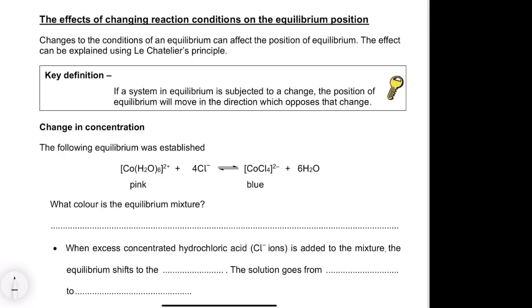In this video we're going to look at the effect of changing different factors, starting with concentration on the position of equilibrium. We've achieved a position of equilibrium where the products and reactants are remaining constant — they're not the same as each other, the rates are the same but the amounts aren't. To understand this, we need to understand Le Chatelier's principle, which says that if a system in equilibrium is subjected to a change, the position of that equilibrium will move in order to oppose that change.